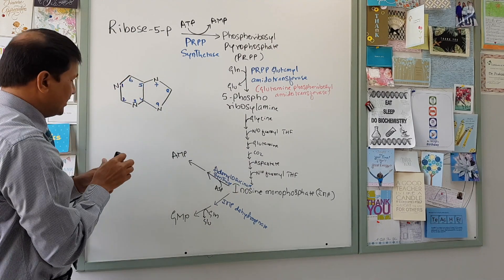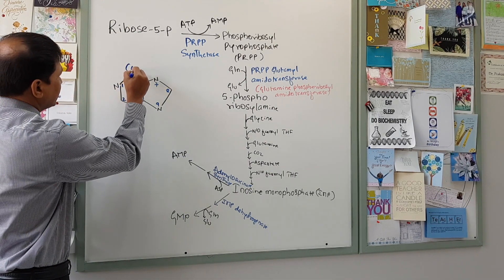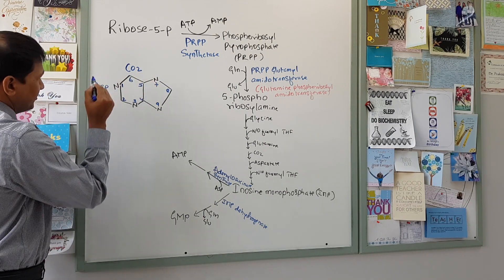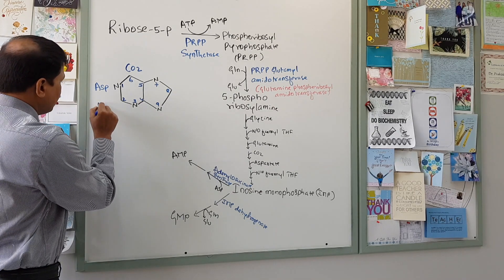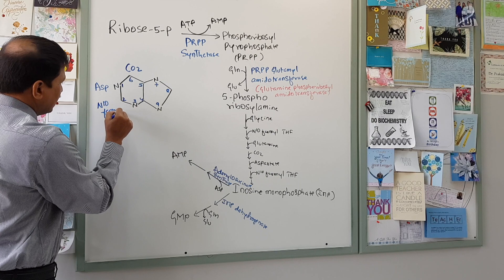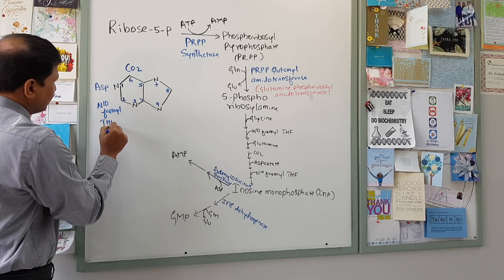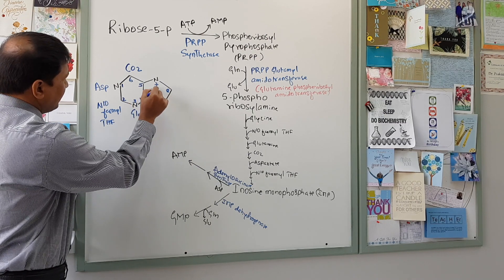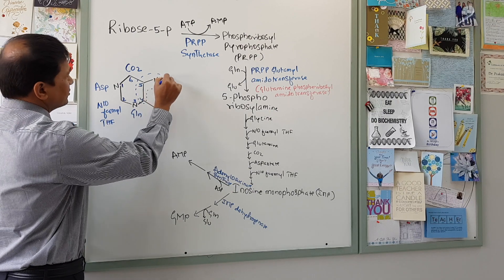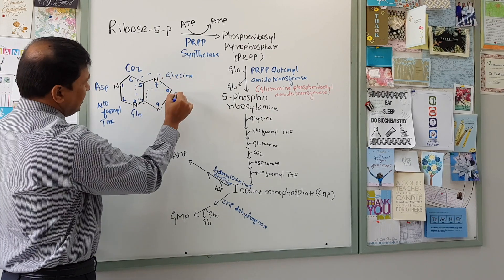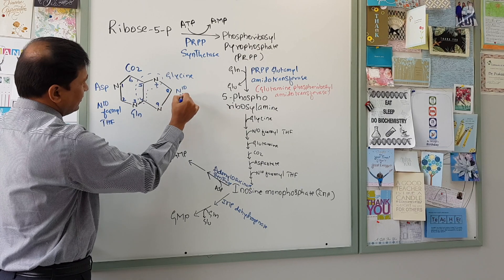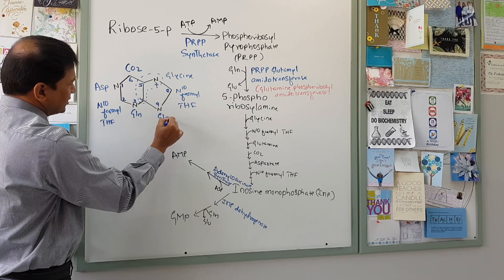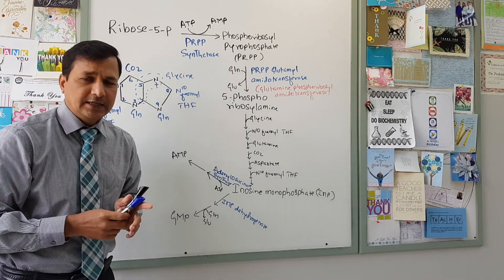Carbon 6 is donated by carbon dioxide in the form of bicarbonate. Nitrogen 1 is given by aspartate, the amino acid aspartate. Carbon 2 is given by N10-formyl-tetrahydrofolate. N3 is given by glutamine, and C4, C5, and N7 — all three atoms — are given by glycine. C8 is given by N10-formyl-tetrahydrofolate, and N9 is given by glutamine.